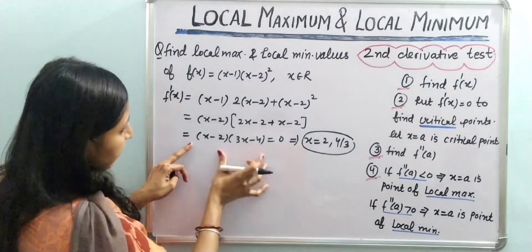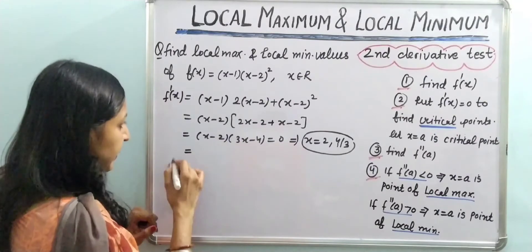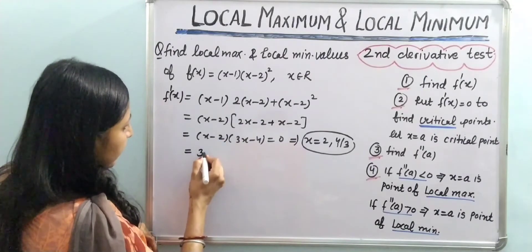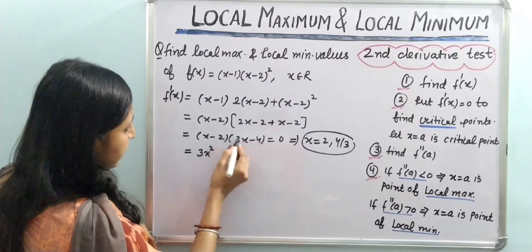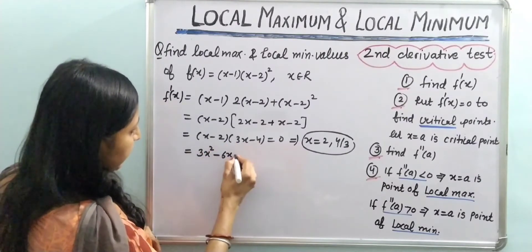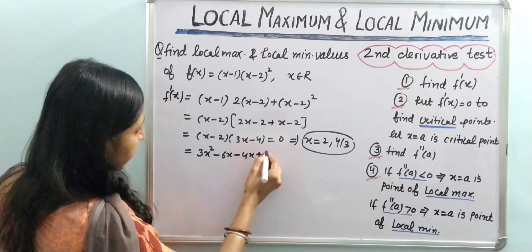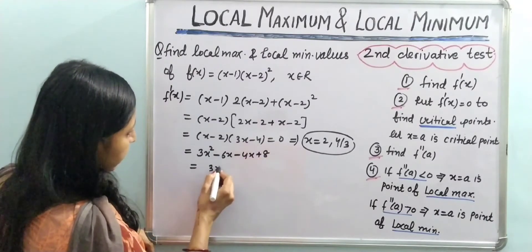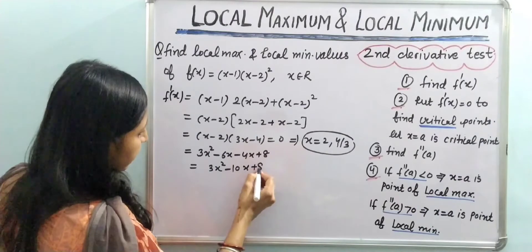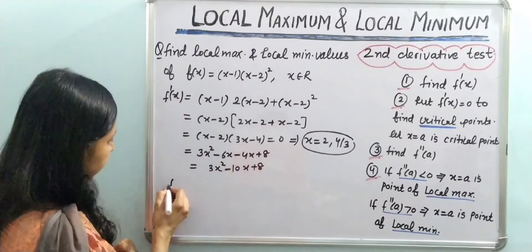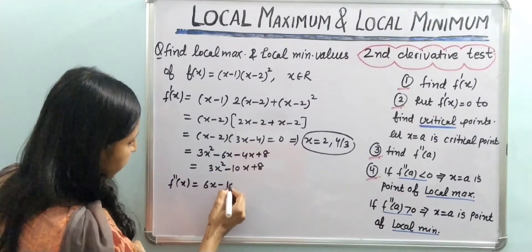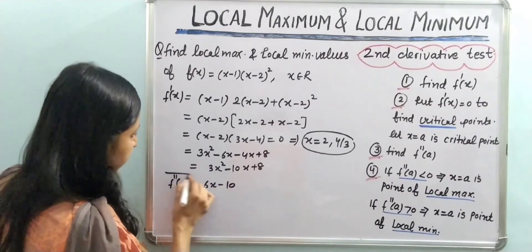This is our first derivative. If we expand and multiply it, we get 3x² - 10x + 8. Now we will find the second derivative. So f''(x) = 6x - 10. This is our second derivative.